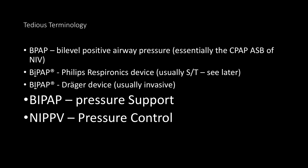Now let's talk about modes of ventilation — and I'm afraid there's quite a lot of tedious terminology here. BPAP is bi-level positive airway pressure; it's essentially the CPAP ASB of non-invasive ventilation. BiPAP with a small 'i' is a registered trademark referring to bi-level positive airway pressure in the context of a Philips Respironics device, usually used in ST mode. BiPAP with a capital 'I' is a registered trademark referring to a Draeger device and usually means invasive ventilation. In general, BiPAP means pressure support ventilation, and NIPPV means pressure control ventilation.